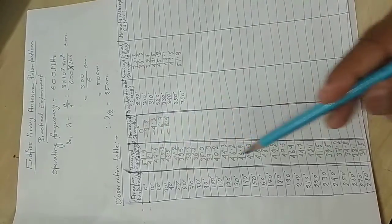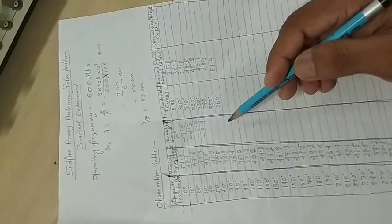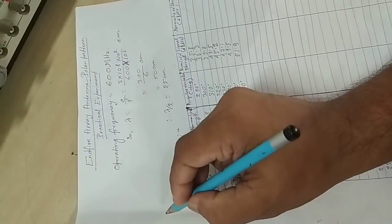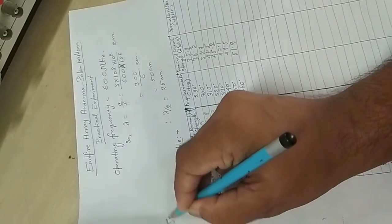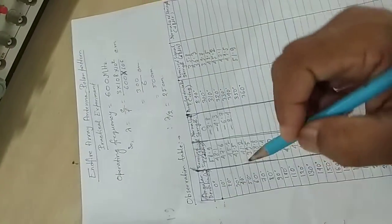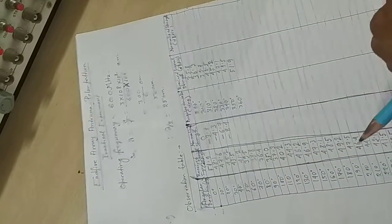Those values look like this, and the normalized value how we can calculate it: the maximum value is here, 51.9, and that 51.9 is being subtracted from all the received signal strength values.